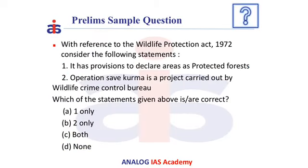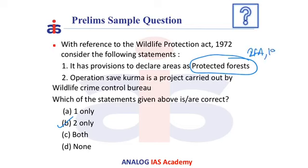Now let us solve a practice question. With reference to the WPA 1972, consider the following statements: first, it has provisions to declare areas as protected forest; second, Operation Save Kurma is a project carried out by the Wildlife Crime Control Bureau. The answer is statement 2 only. Protected areas are not declared under this act — they are declared under the Indian Forest Act of 1927. Operation Save Kurma is indeed carried out by the Wildlife Crime Control Bureau to stop the illegal trade of live turtles.